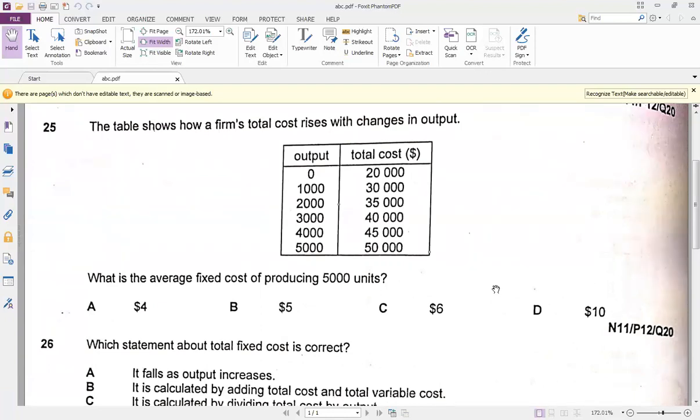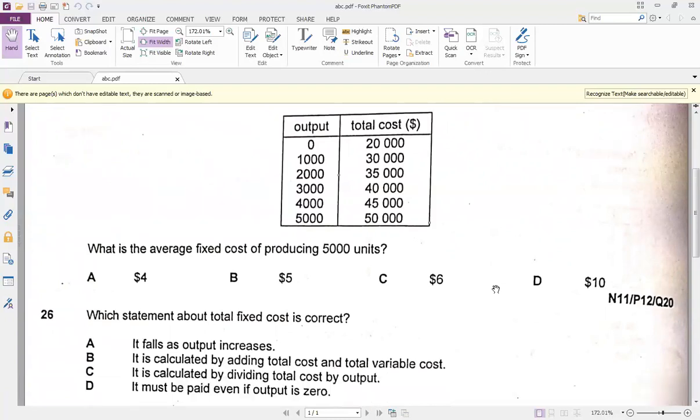So what about now if we want to find average fixed cost? What is the formula? Obviously dividing the fixed cost with the total number of output will give us the average fixed cost. So at output 5,000, the total cost is 50,000 but the fixed cost is 20,000, and that 20,000 if we divide with 5,000, we get the answer $4. So question 25 will give us option A as the correct one.